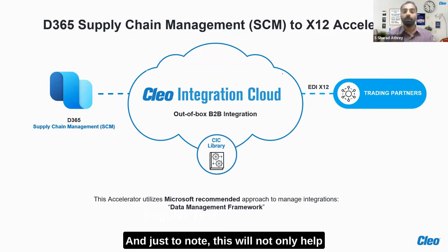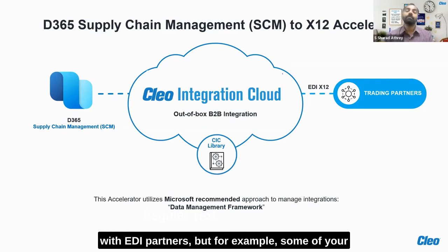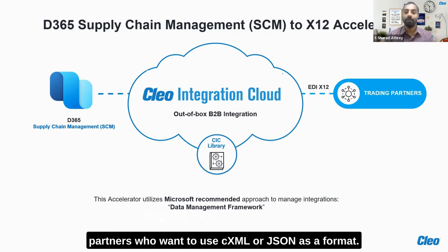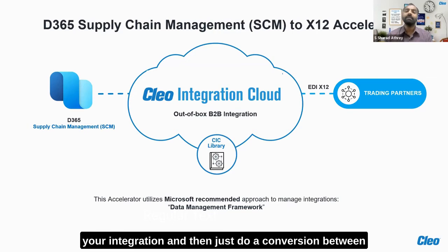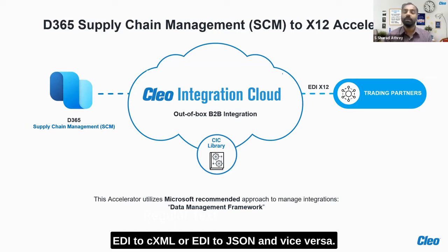Just a note: this will not only help with EDI partners, but for example, if some of your partners want to use CXML or JSON as a format, you will still be able to use this X12 as a backbone of your integration and then just do a conversion between EDI to CXML or EDI to JSON and vice versa.